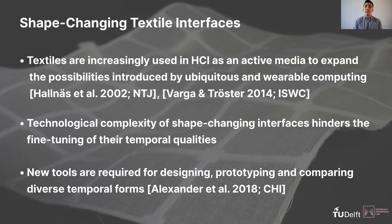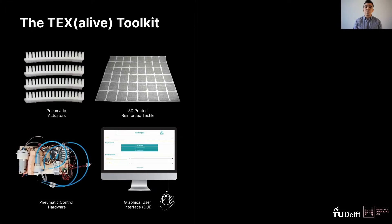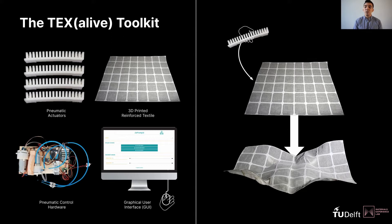To bridge this gap in designing shape-changing interfaces with textiles, this pictorial presents the Textilife toolkit. Textilife consists of pneumatic actuators, a sample of woven fabric reinforced through 3D printing, the pneumatic control hardware, and the graphical user interface. With this toolkit, designers can explore temporal expressions by connecting the pneumatic actuators to the intersection points across the grid structure in various configurations. The resulting expression can be modified through performative actions such as flipping the textile interface to hide the actuators, holding it in their hands, and wearing it around the body.